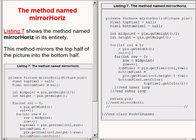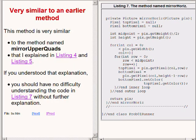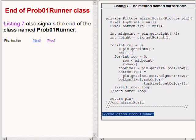The code on the right of your screen is very similar to the code in the method named mirrorUpperQuads that I explained earlier. If you understood that explanation, you should have no difficulty understanding the code now showing on the right side of your screen. Therefore, it shouldn't be necessary for me to provide a detailed explanation. The last line in the code signals the end of the class named Prob01Runner.